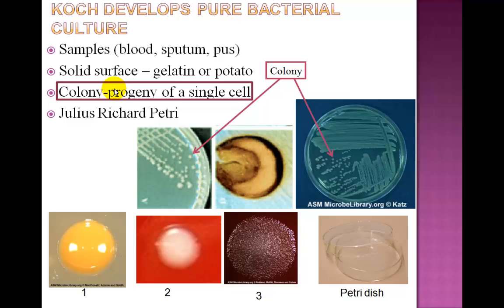He solved the problem by using samples of sputum, blood, or pus, and isolating the bacteria by smearing the sample onto a solid surface, such as a gelatin as shown here, or a potato. What he obtained were bacterial cells that multiplied forming small masses that he called colonies, as shown here by this white spot.